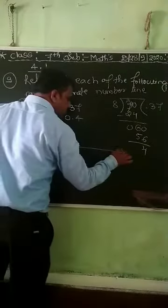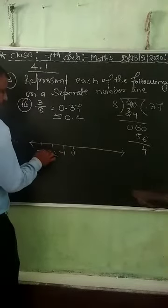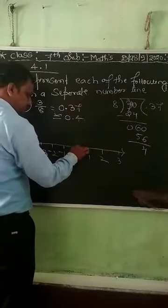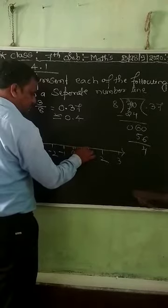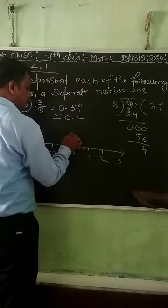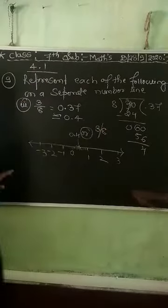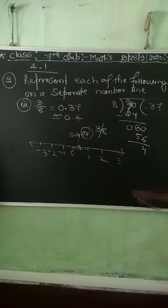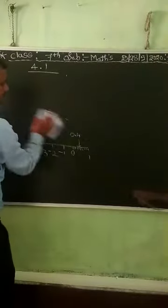Draw the number line from the positive side as well as the negative side. Mark 0, then minus 1, minus 2, minus 3 on the left and 1, 2, 3 on the right. Since 3/8 ≈ 0.4, divide the space between 0 and 1 into equal parts and mark 0.4 on the number line.